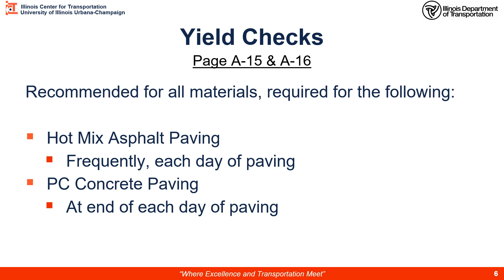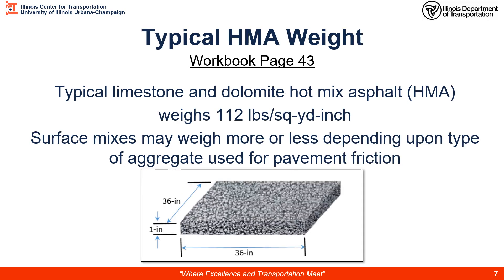We can measure width and length pretty accurately, but there is no good way to measure the thickness of an HMA mat other than cutting a core. On workbook page 43, we show the typical HMA weight or density. Limestone and dolomite aggregate hot mix asphalt typically weighs on the order of 112 pounds per square yard per inch of thickness. Surface mixes can weigh more or less depending on the aggregate type, and we will cover surface mixes in a later module. To visualize this: 1 square yard — 36 inches by 36 inches by 1 inch thick — of HMA would weigh approximately 112 pounds.